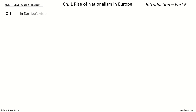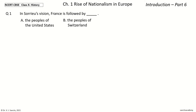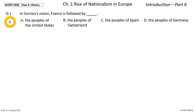Question 1: In Sorrieu's vision, France is followed by [blank]. The options are: the peoples of the United States, the peoples of Switzerland, the peoples of Spain, the peoples of Germany. And the answer is the peoples of Germany. So, in Sorrieu's vision, France is followed by the peoples of Germany.